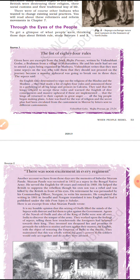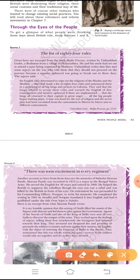To get a glimpse of what people were thinking in those days about British rule, two study sources are given in your book. The first source tells of a Brahmin named Vishnubhat who was traveling from Maharashtra to Kashi. In the middle of his journey he met some soldiers who told him not to move further because a massive upheaval was going to break out in three days.